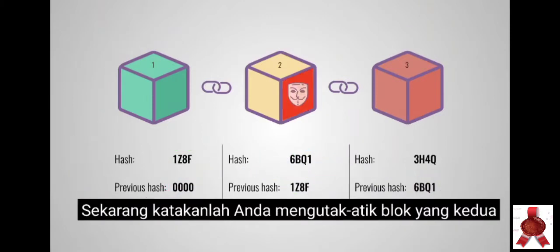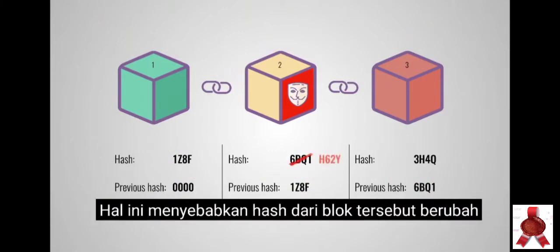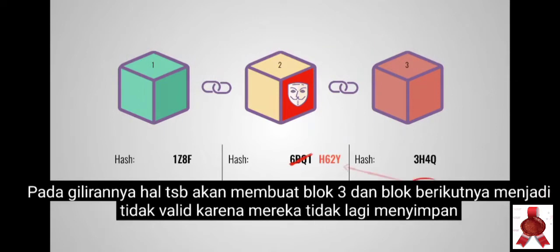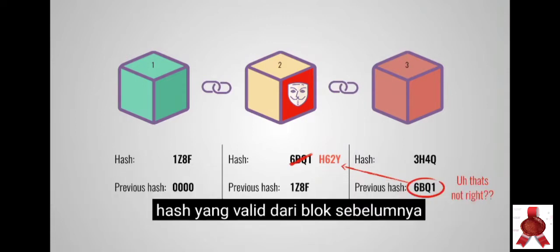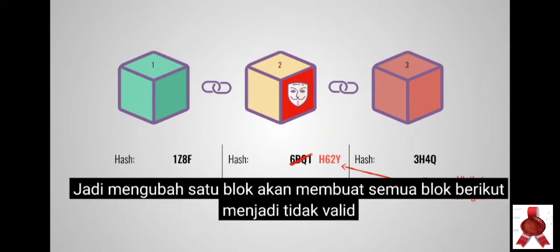Now, let's say that you tamper with the second block. This causes the hash of the block to change as well. In turn, that will make block 3 and all following blocks invalid because they no longer store a valid hash of the previous block. So changing a single block will make all following blocks invalid.